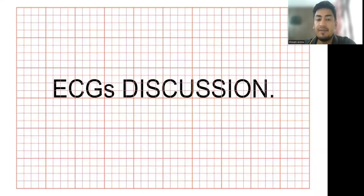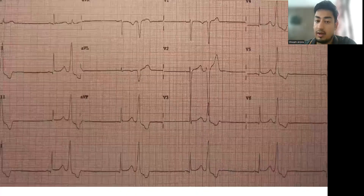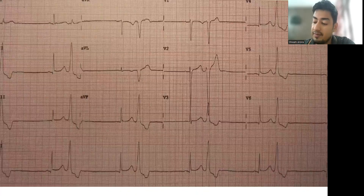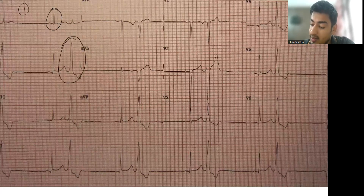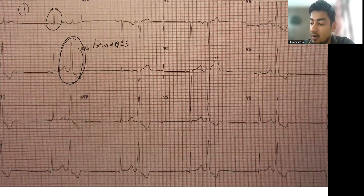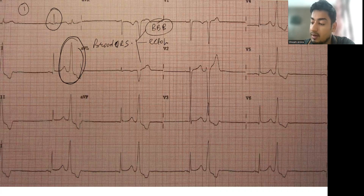Today we will discuss different types of ECGs. In the first ECG, there is a normal P wave and a normal QRS, but one complex has a broad QRS. The causes of broad QRS are bundle branch block, ventricular ectopic, or ventricular tachycardia.